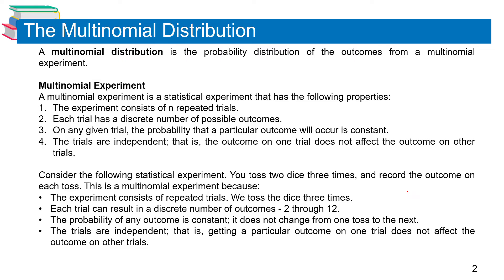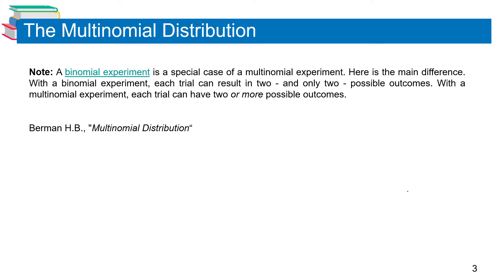Note that a binomial experiment is a special case of a multinomial experiment. The main difference is: with a binomial experiment, each trial can result in two and only two possible outcomes, whereas with a multinomial experiment, each trial can have two or more possible outcomes.